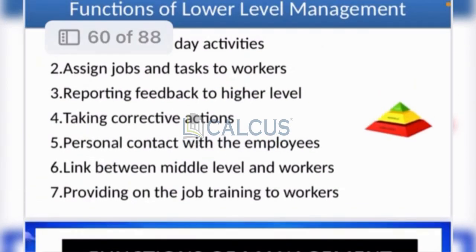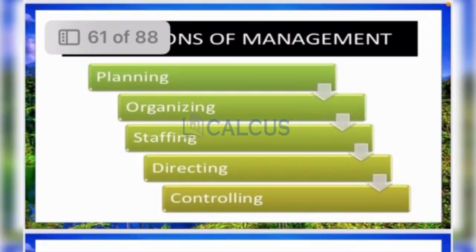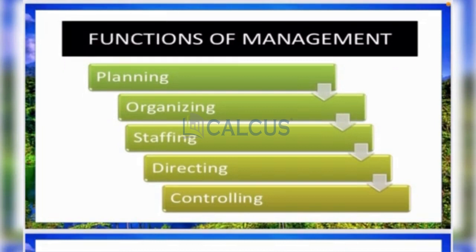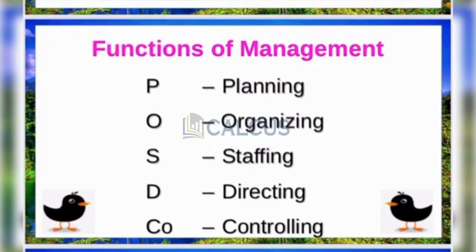There are three levels of management: top, middle, and lower. When we go to this chapter, we will learn about the management functions: Planning, Organizing, Staffing, Directing, and Controlling.